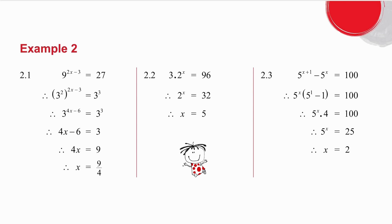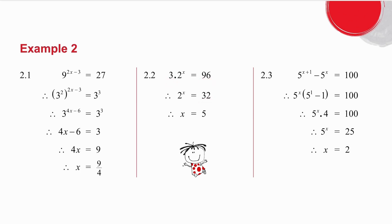In 2.2, be very careful — this is 3 to the 1 times 2 to the x. I have different bases and different powers, so I cannot multiply or simplify at all. The first thing I need to do is take the 3 across and divide. 96 divided by 3 is 32, and 2 to the power what gives you 32? It's 2 to the power 5.